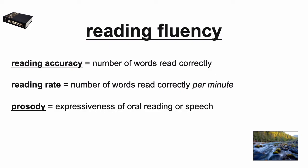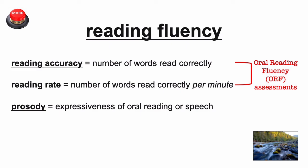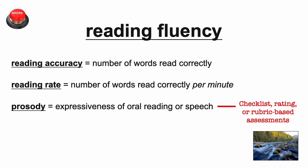Finally, there's prosody, which is the expressiveness of oral reading or speech. This is made up of several things like paying attention to punctuation, voice intonation, volume, and pitch. Accuracy and rate are very easy to measure quickly and reliably, which is why they're used a lot in progress monitoring, instructional planning, and helping to identify students who may be at risk for future reading failure or a print-related disability. Teachers can also assess prosodic reading, but this is trickier than calculating accuracy or measuring rate — teachers use more qualitative measures like checklists, rating scales, or rubrics.